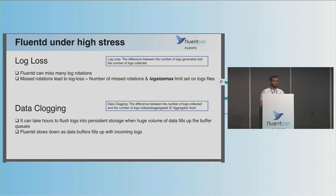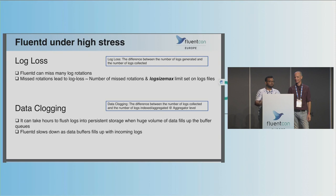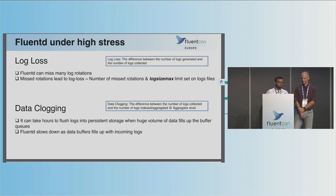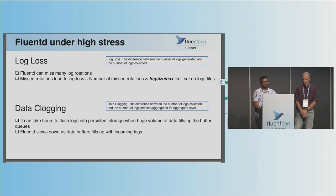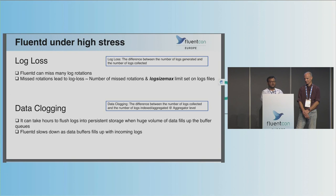We formally define our two problem areas. The first is log loss: the difference between what was collected and what was generated by workload applications. This occurs when FluentD misses log rotation, and can be accounted for by the number of missed rotations times the size of each log file. The second is data clogging: when very little memory or CPU is available to FluentD's output buffer, the buffer overflows and FluentD pushes back to slow its reading. Data clogging can cause log loss.